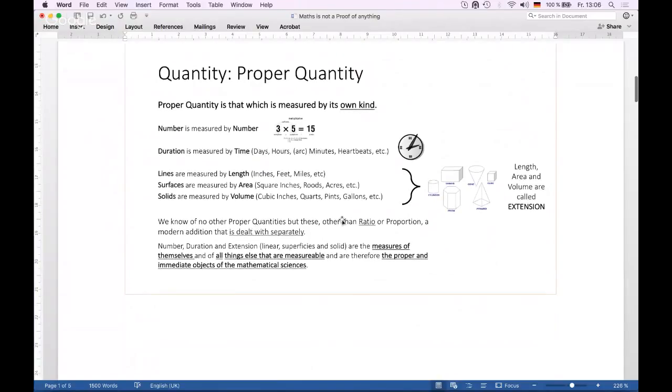There's a special exception to do with ratio. The ratio of one thing to another or what we call a proportion is also a proper quantity because a ratio can also be described in terms of itself. So three twelfths is the same as one quarter, for example. So what Aristotle and Reed basically both agree on is that number, duration, and extension, and by extension is meant any of the dimensions in space, so either linear surfaces or volumes, are the measures of themselves and of all things else that are measurable, and that these are therefore the proper and immediate objects of the mathematical sciences.